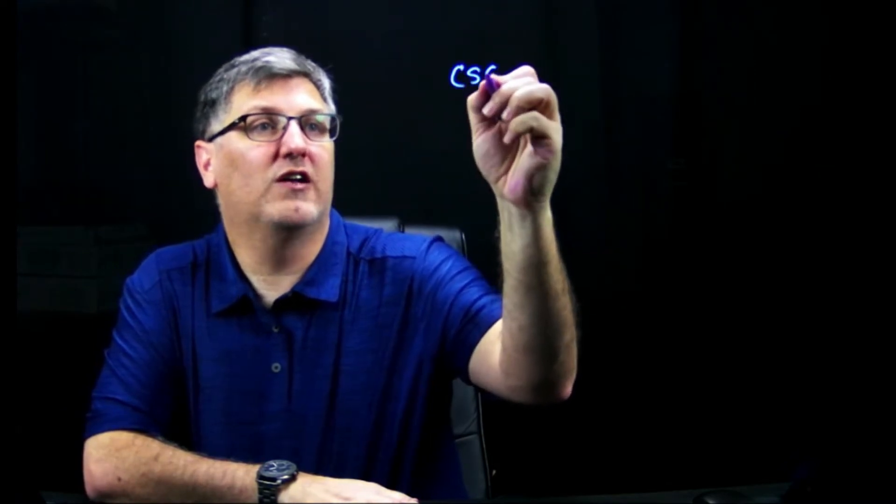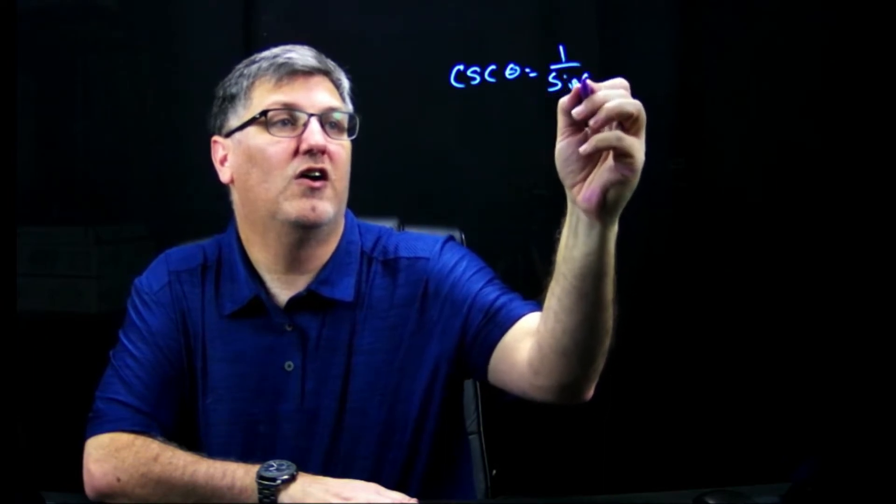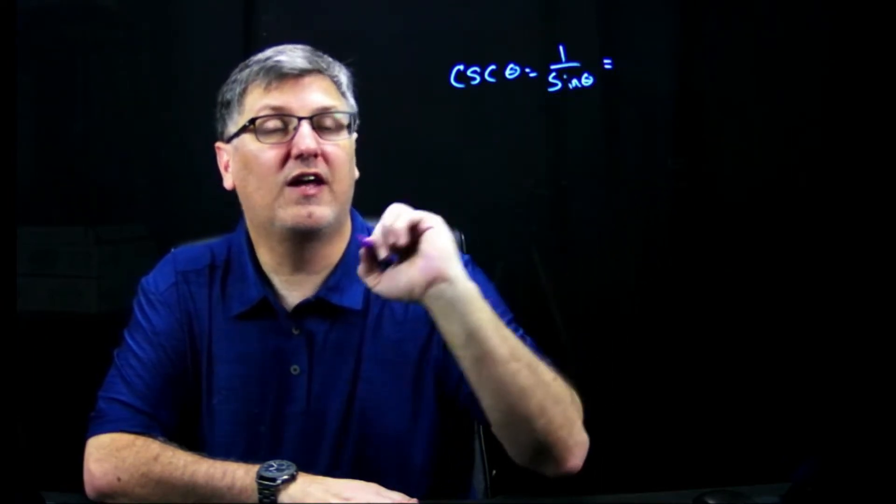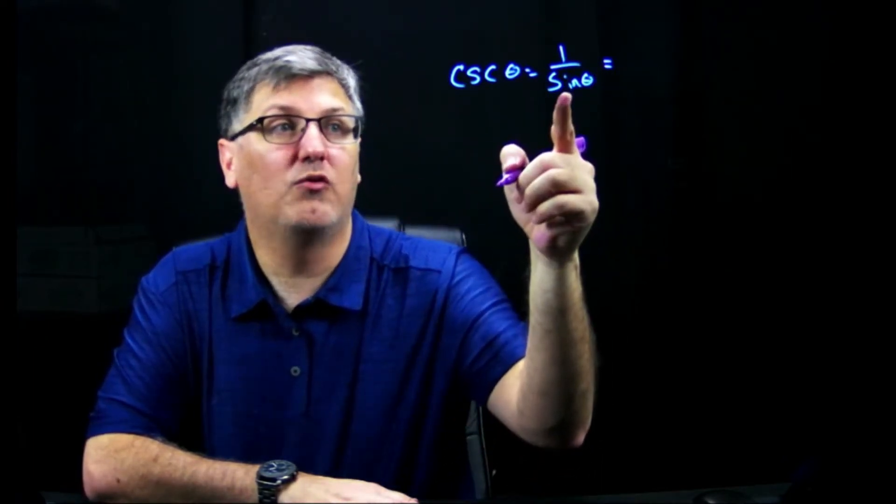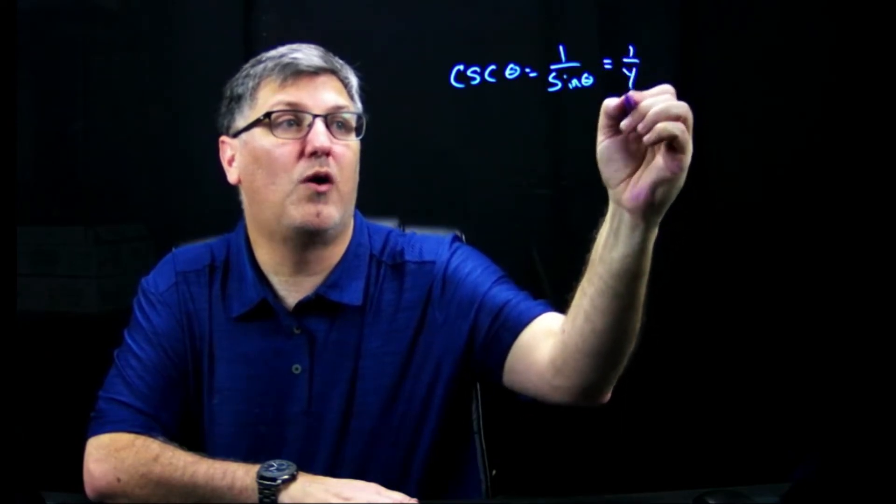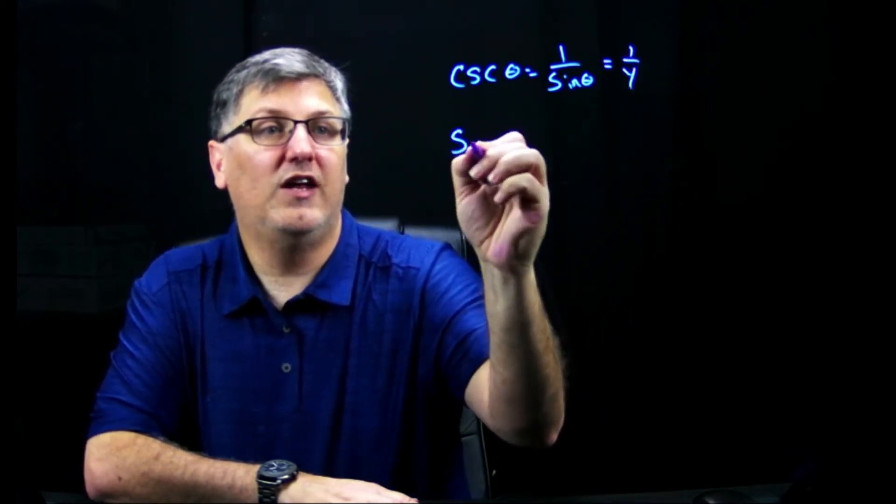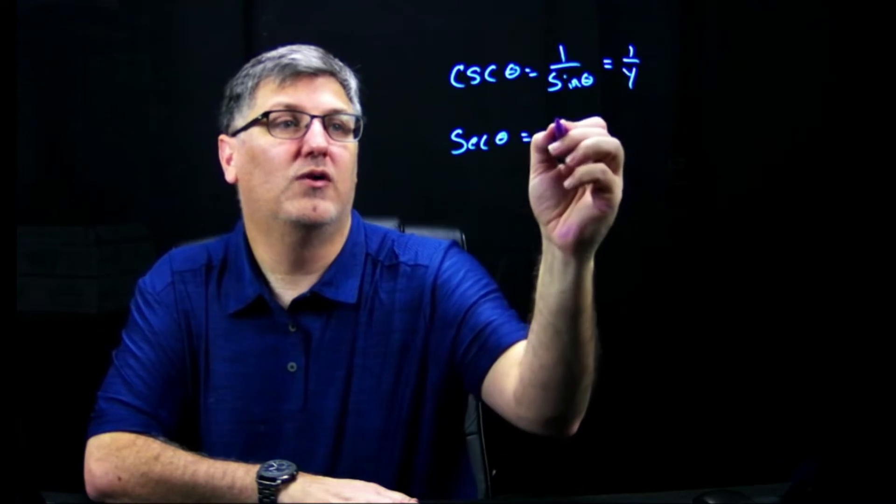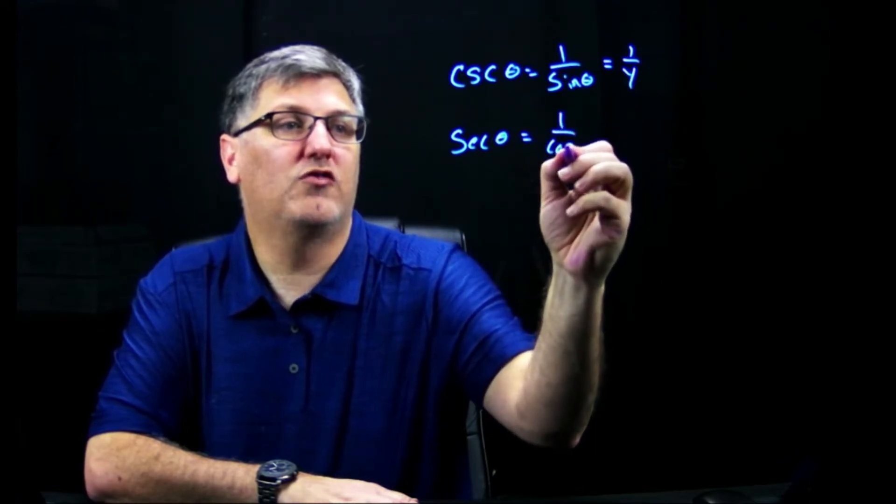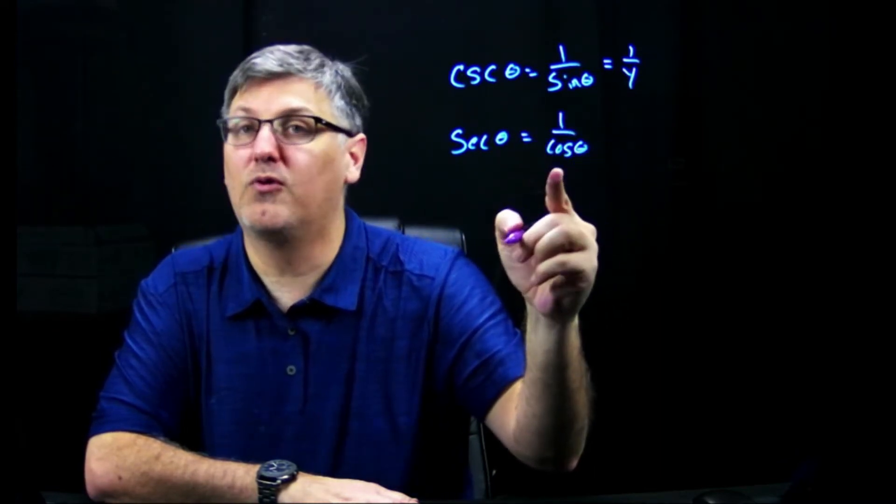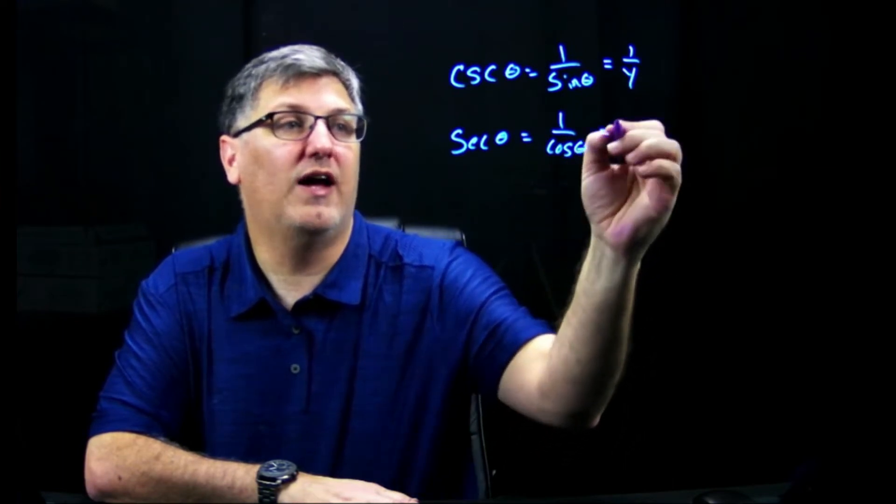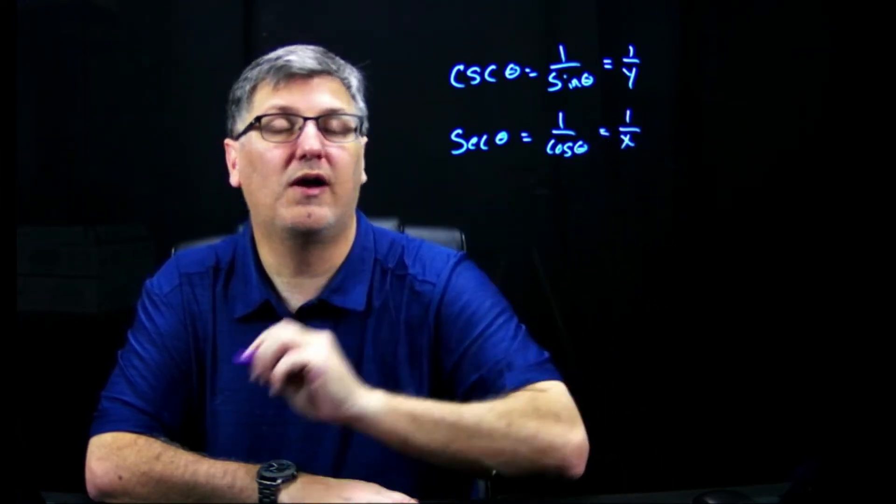Just to remind you that cosecant of some angle is 1 over sine of that angle. In this case, with the unit circle, we knew sine was y, so it's going to be 1 over y. Secant of some angle, if you remember, was 1 over cosine because it's the reciprocal of cosine. Cosine was x, therefore, for the unit circle, we're going to have 1 over x.